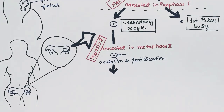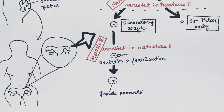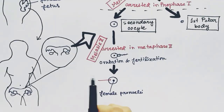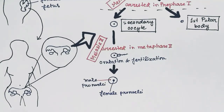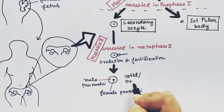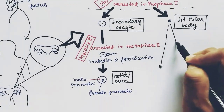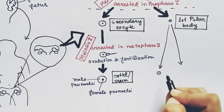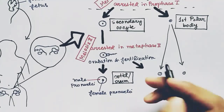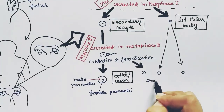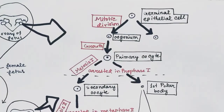After fertilization, meiosis two completes — that is, the formation of the ootid or ovum occurs from the secondary oocyte. After the formation of the ovum, the male pronuclei and female ovum meet and fertilization is complete. Meanwhile, the first polar body produces two more polar bodies, and the secondary oocyte also produces another polar body.